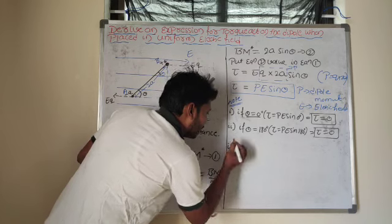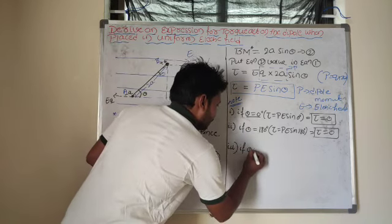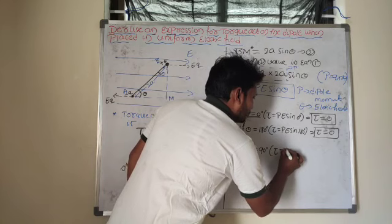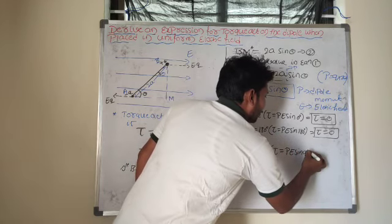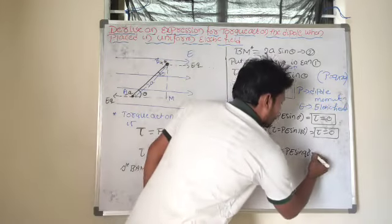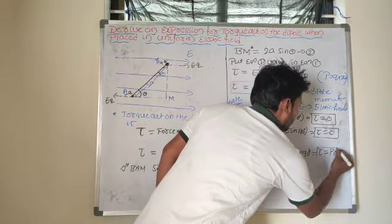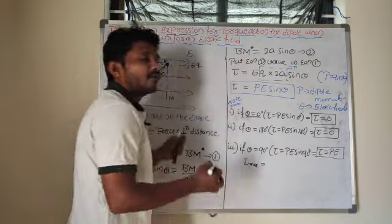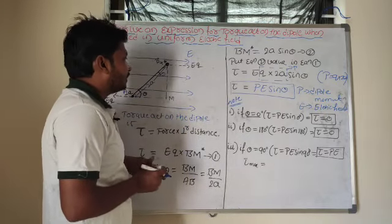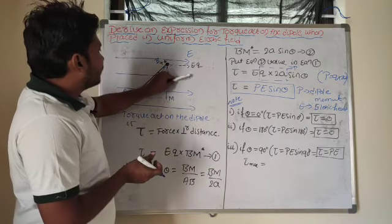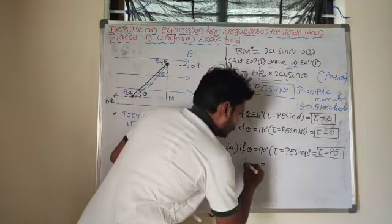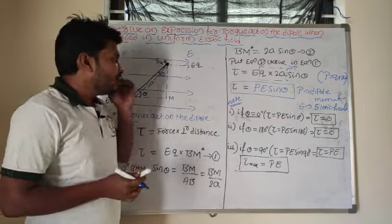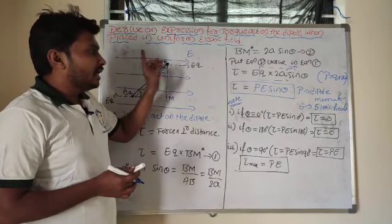Then when will the torque acting on the dipole be maximum? If θ = 90°, then τ = PE sin 90° = PE × 1 = PE. So the torque value is maximum when the dipole is perpendicular to the electric field, and the maximum torque τ_max = PE.